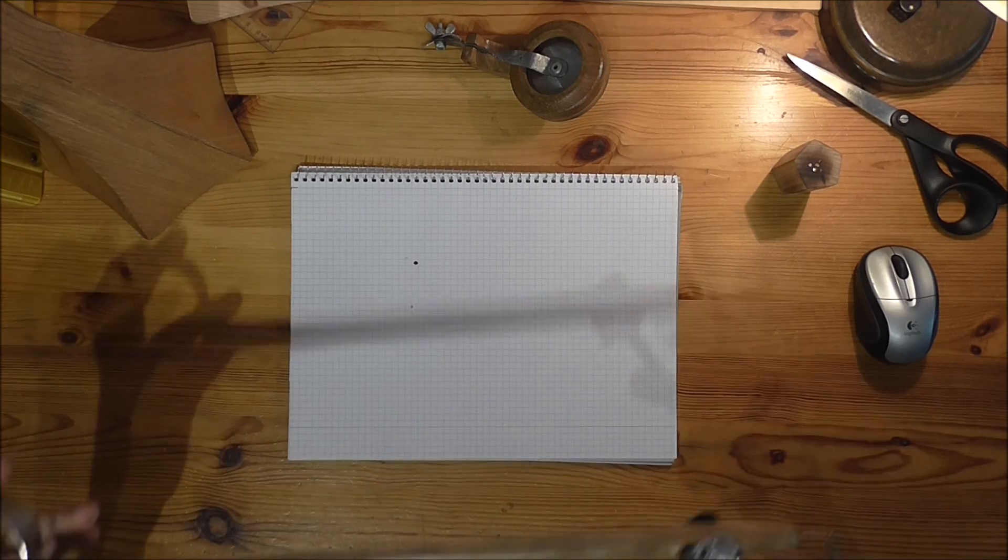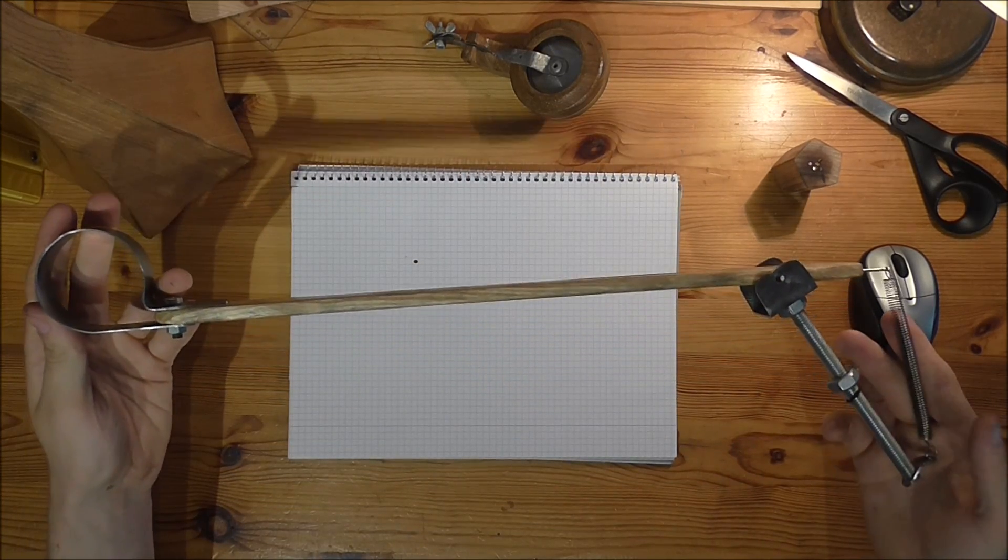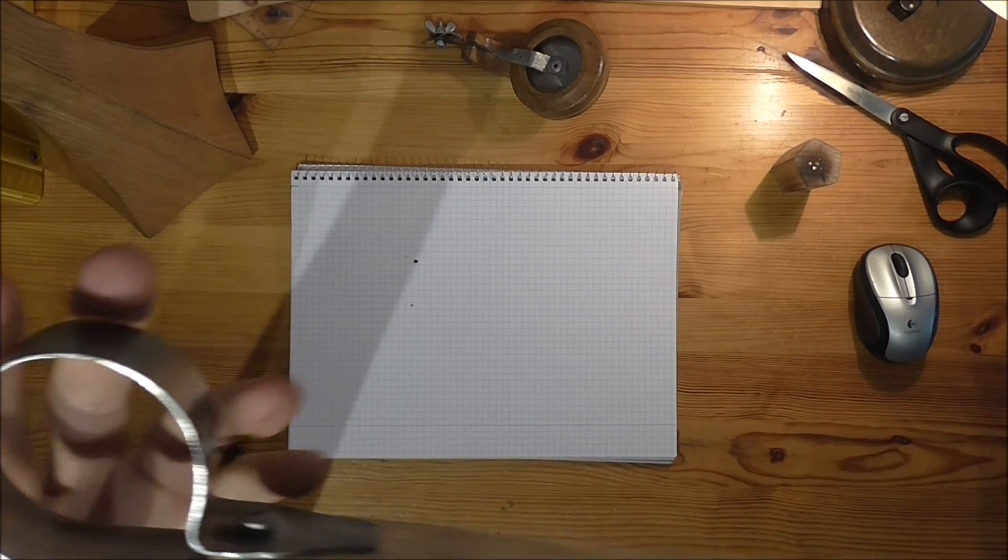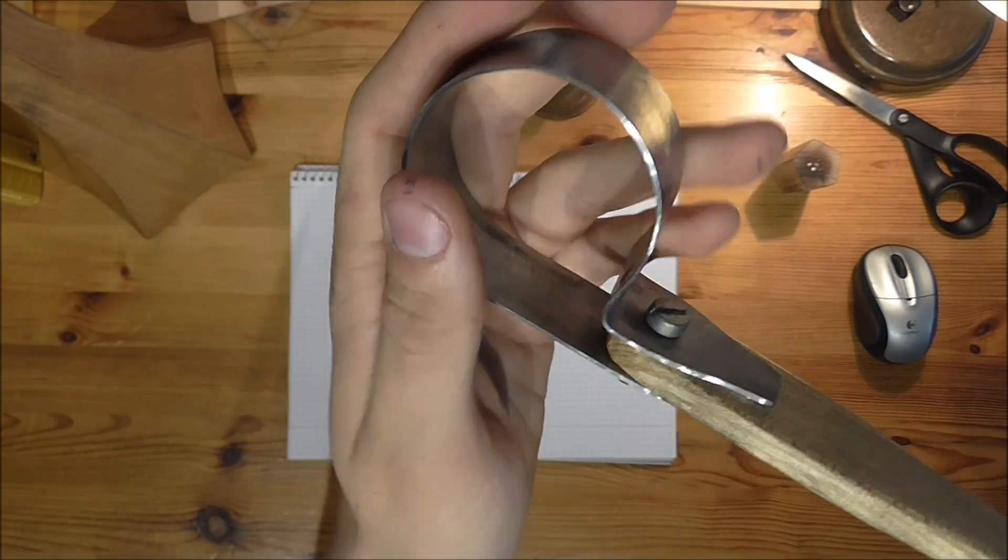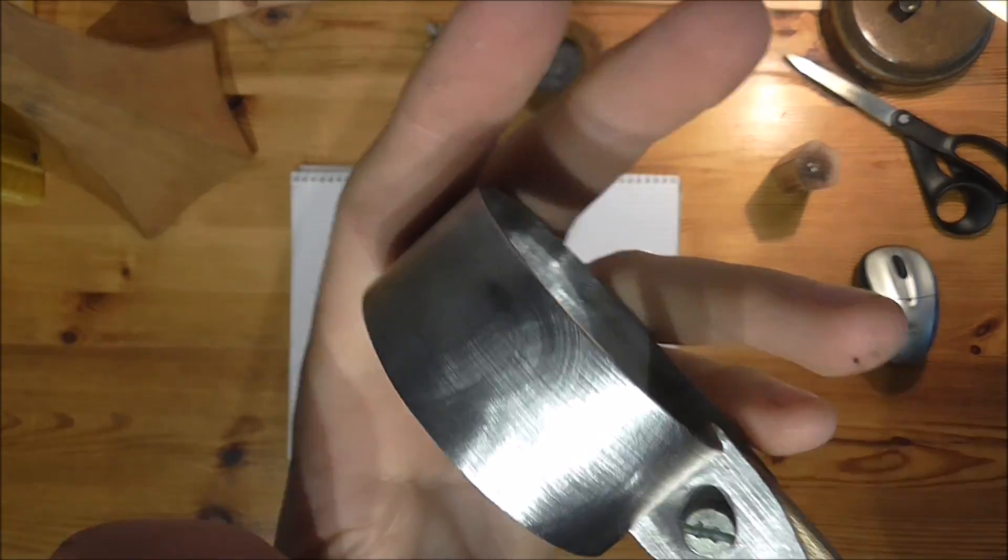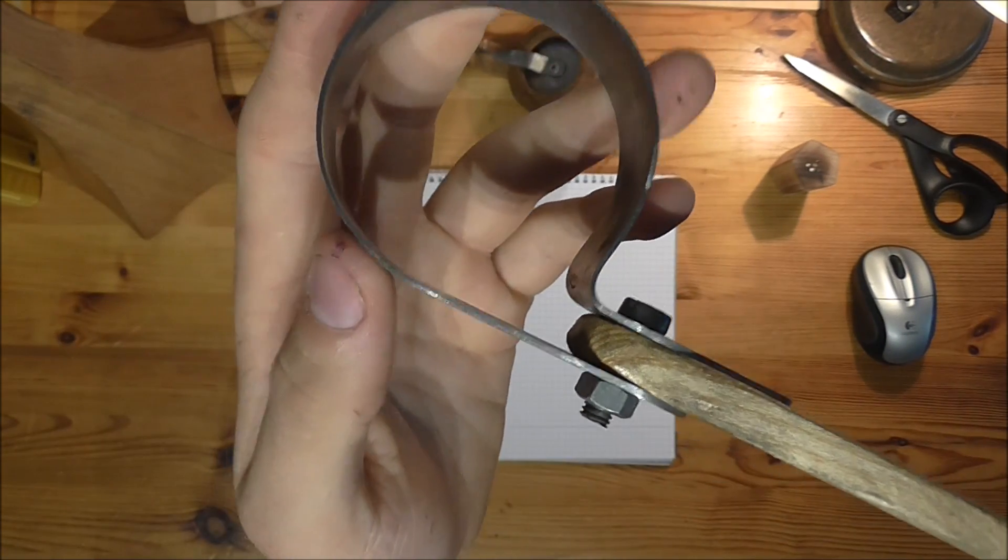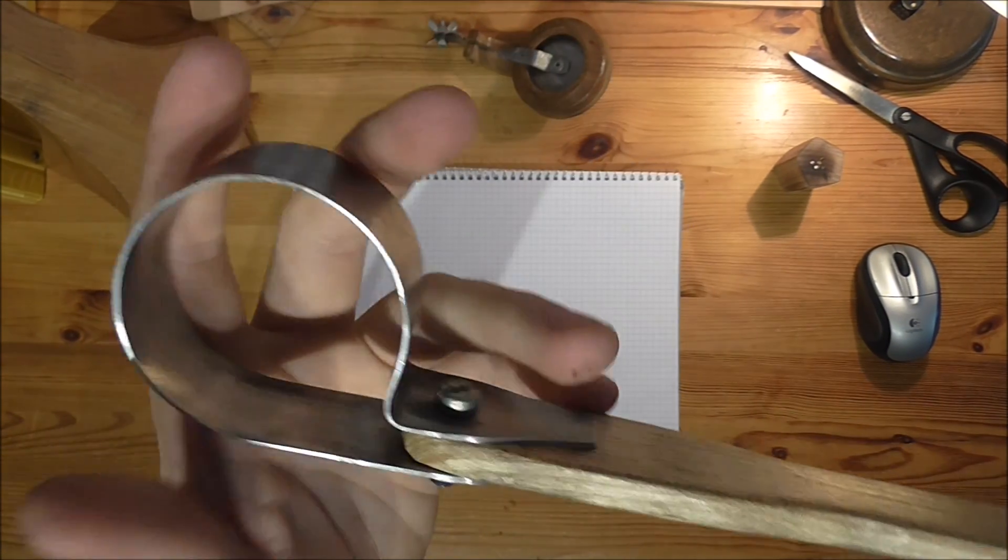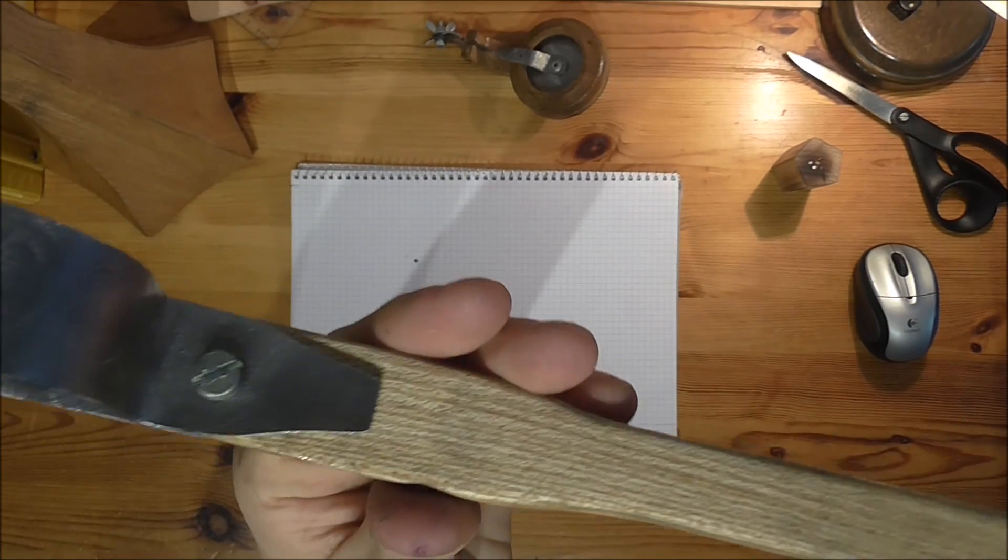The next part is the arm that holds the horn itself. Here you can see the metal part that holds the horn and the sound box, a simple bent piece of metal, and the wooden arm.